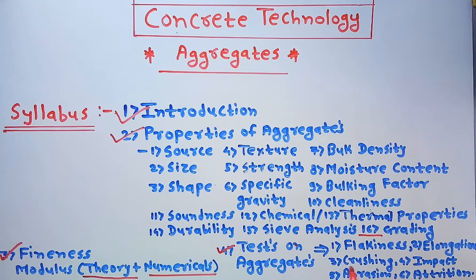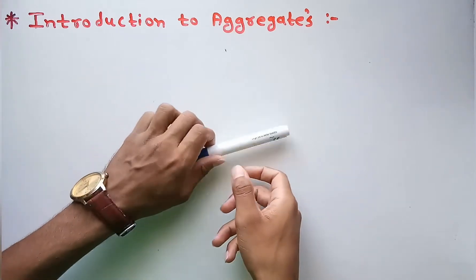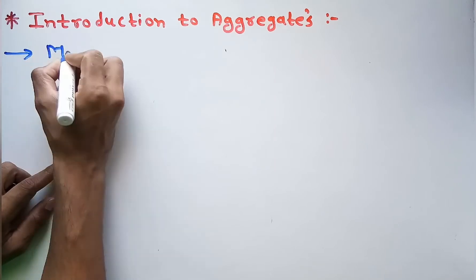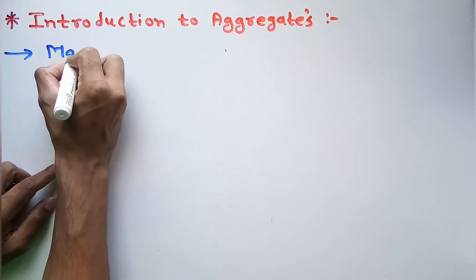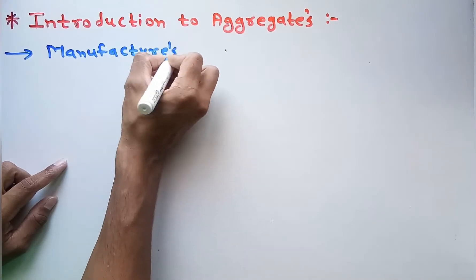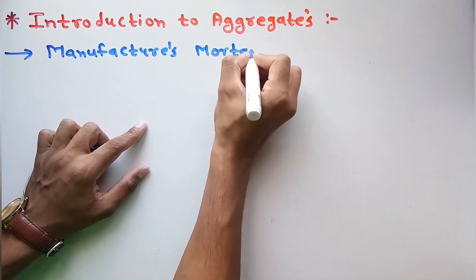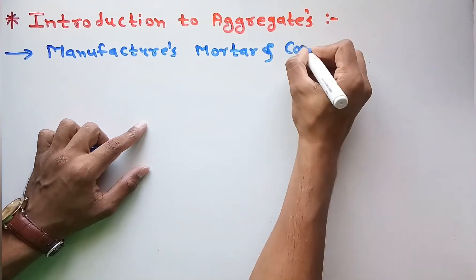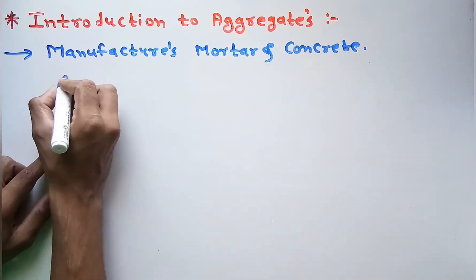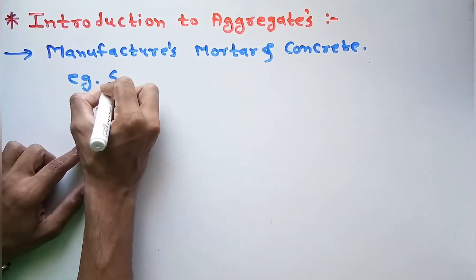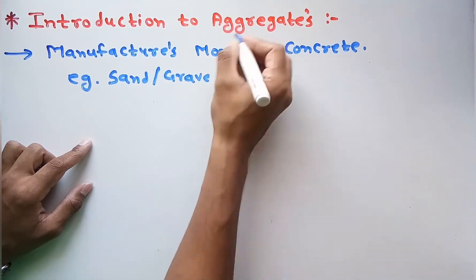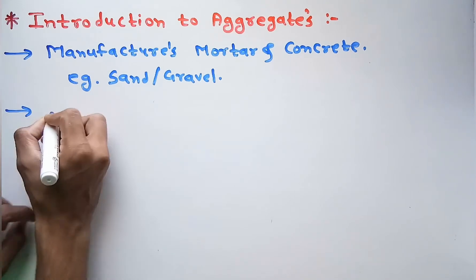First of all, we will see what is meant by aggregates. Aggregates are basically the material which is used to manufacture mortar and concrete. Aggregates can be used in the form of sand or gravels — sand or gravels are the examples or forms of aggregates. Now we will see its significance or uses.